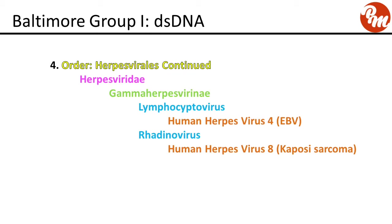Continuing in family Herpesviridae, subfamily gamma herpesvirinae: genus lymphocryptovirus includes human herpes virus 4, also called Epstein-Barr virus (EBV). The next genus is rhadinovirus, which includes human herpes virus 8, or Kaposi sarcoma-associated virus.